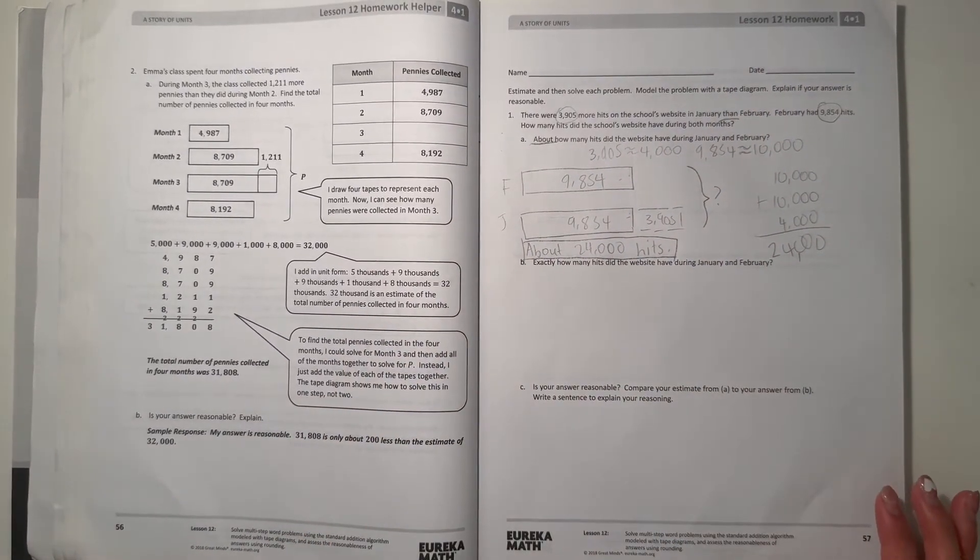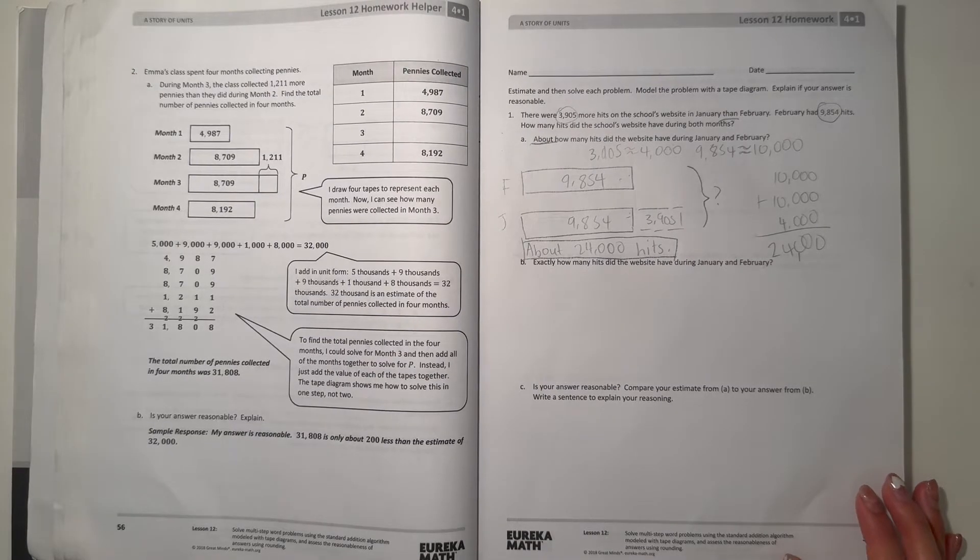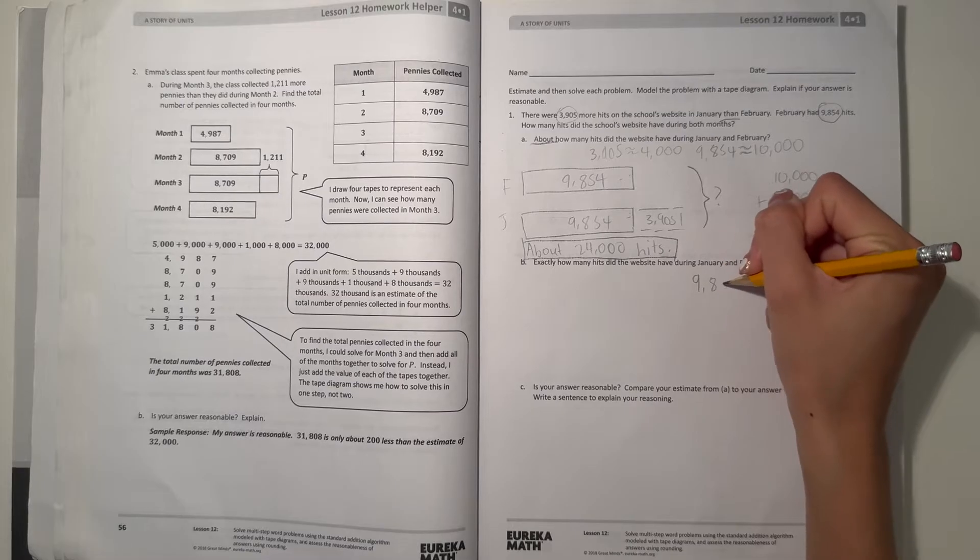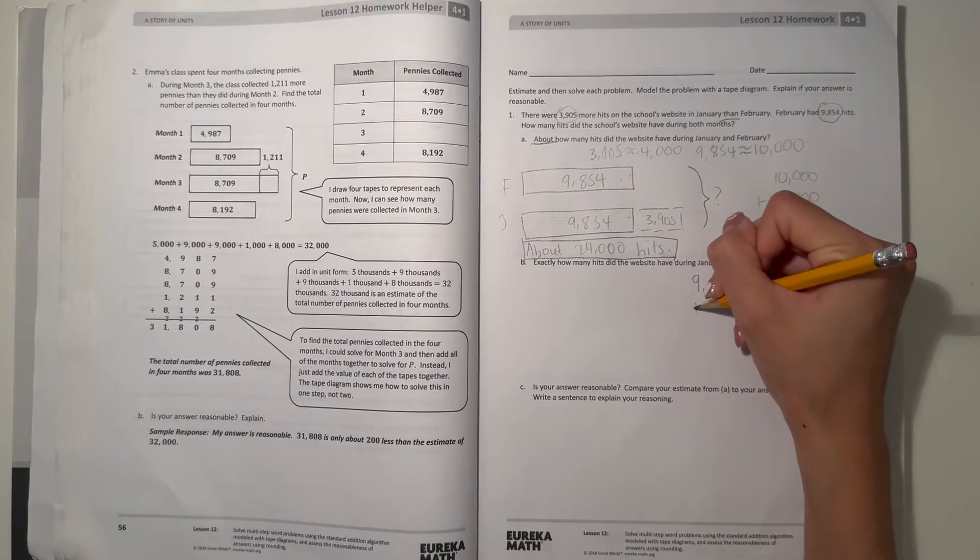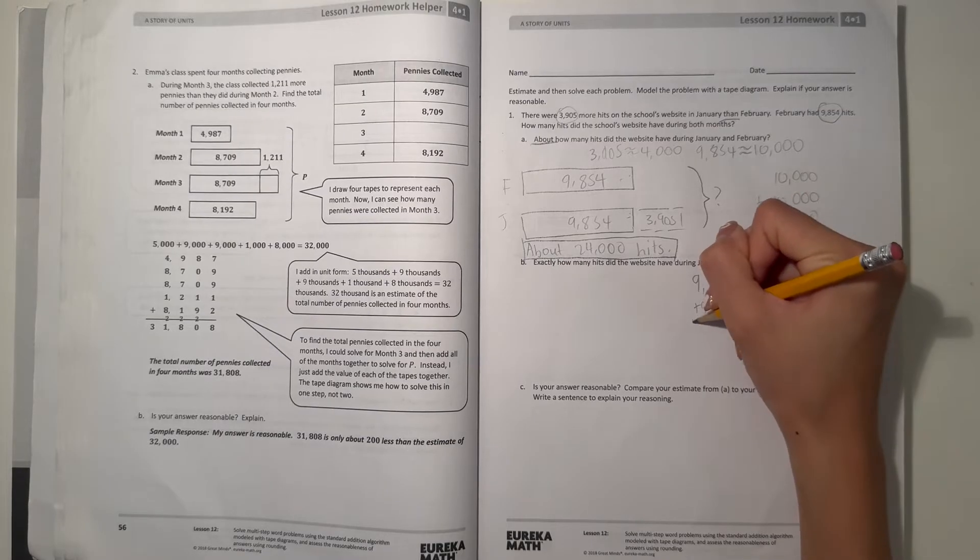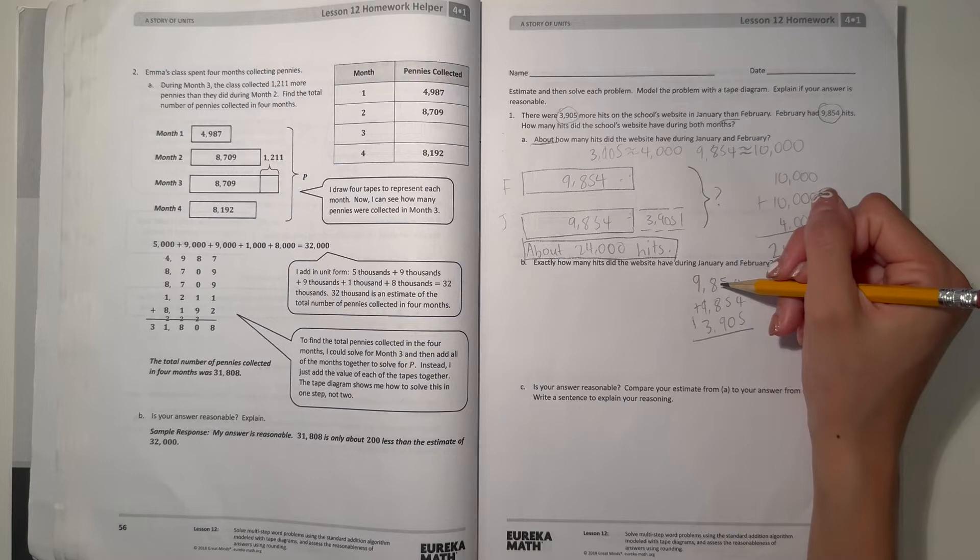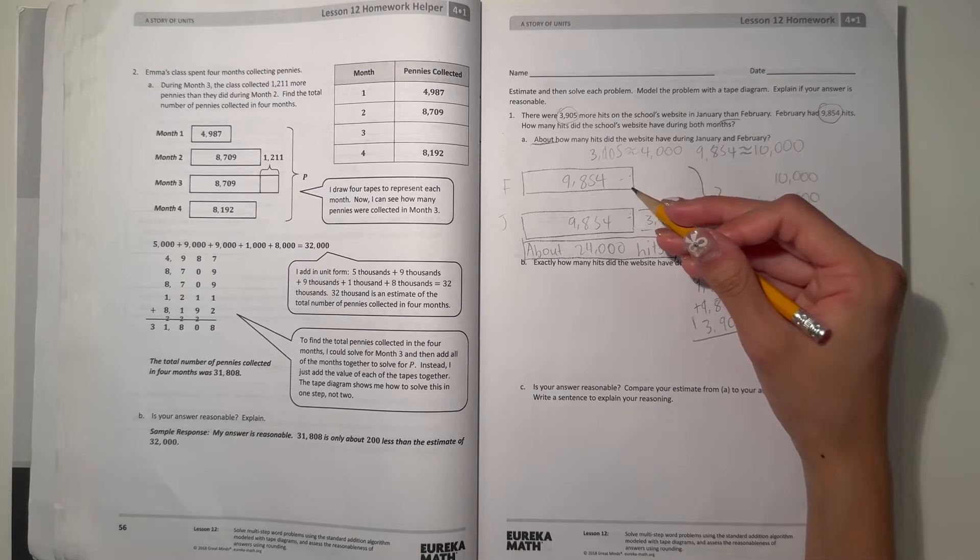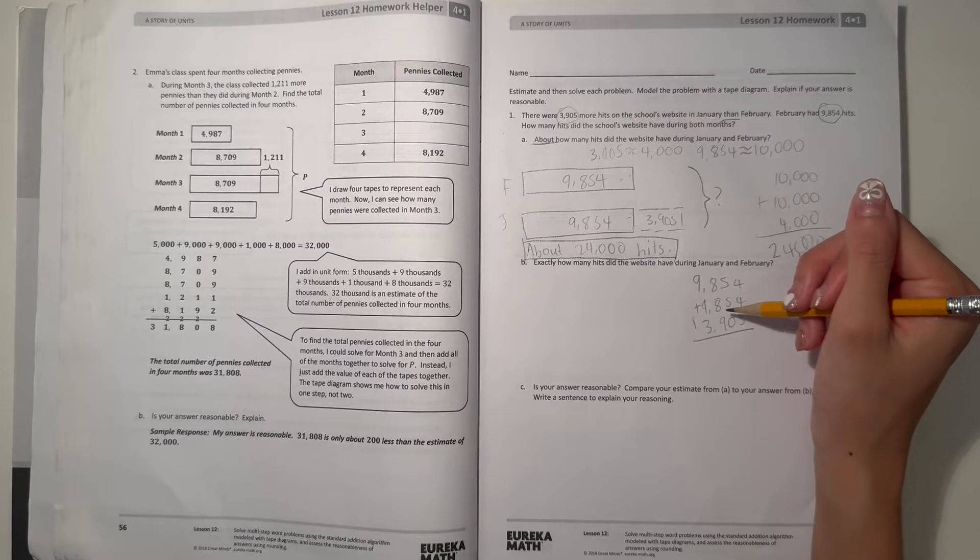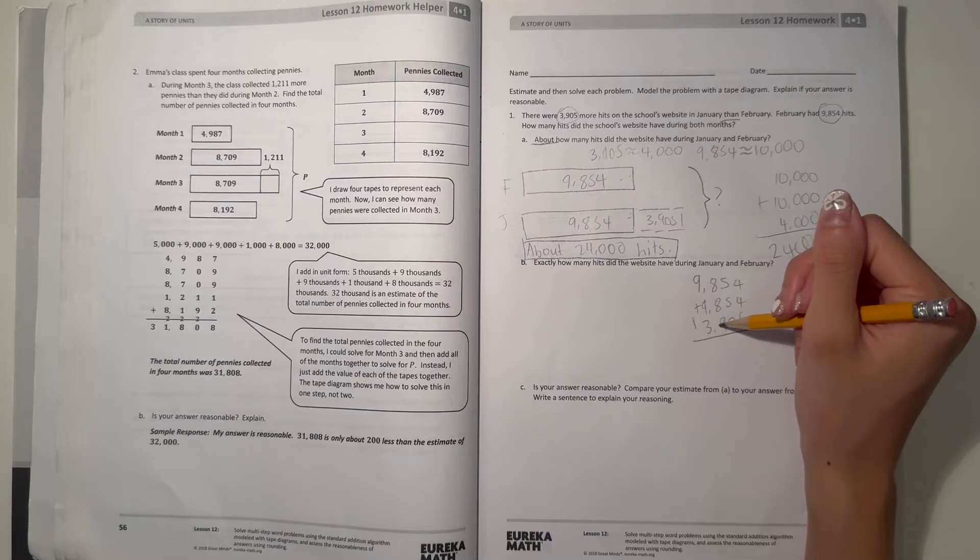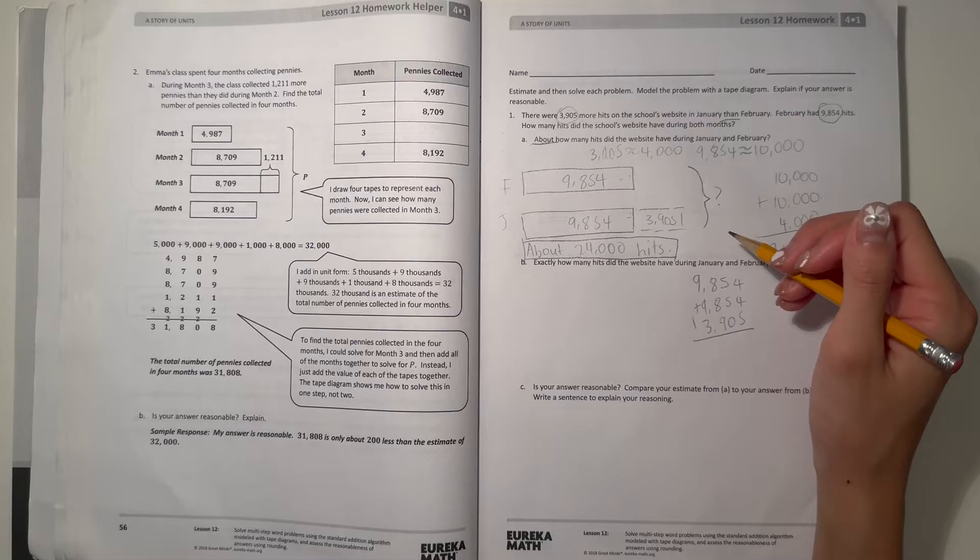And part B: exactly how many hits did the website have during January and February. So now we're finding the exact number. We already have our tape diagram, so we can just add up our numbers. 9,854 plus 9,854 and then plus 3,905.